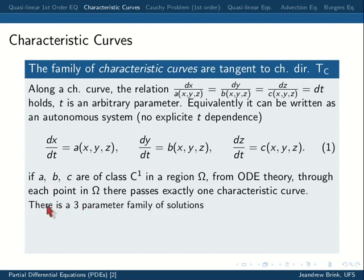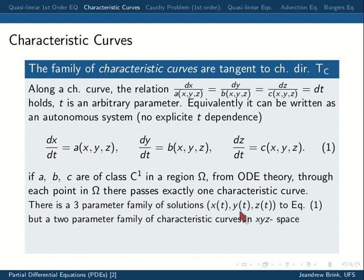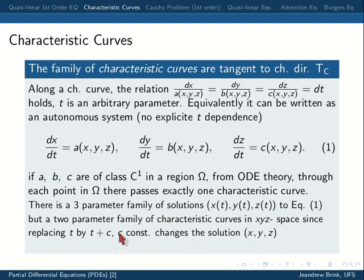Through each point there's one tangent vector and the curve flows along that tangent vector. That means you have a two-parameter family of characteristic curves — when you integrate three ODEs you get three constants of integration, but since we only care about the curve (not position along it), we can lose one parameter. The definition of a characteristic curve is a curve satisfying these differential equations with functions from the quasi-linear equation.